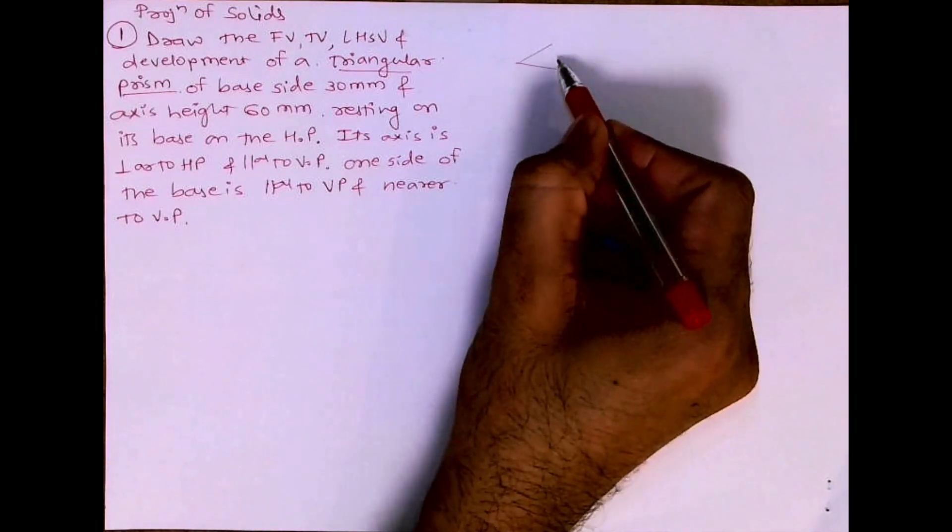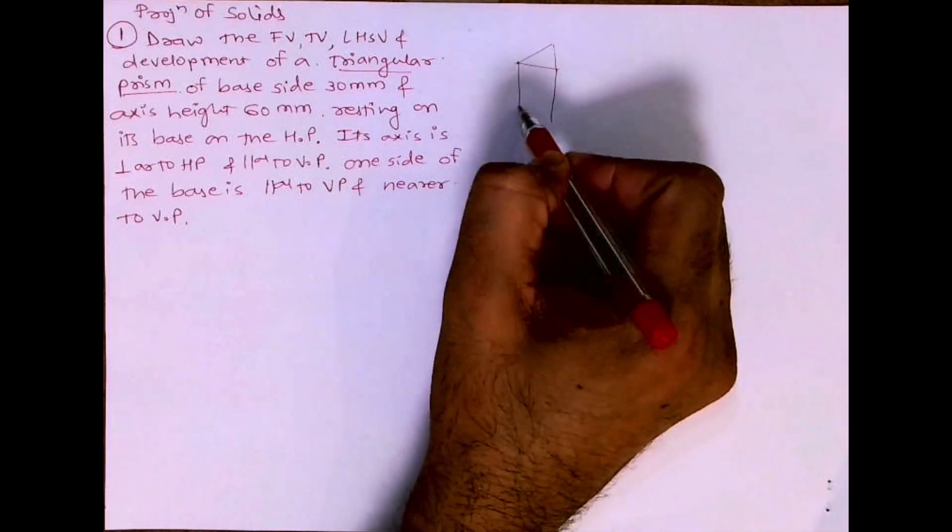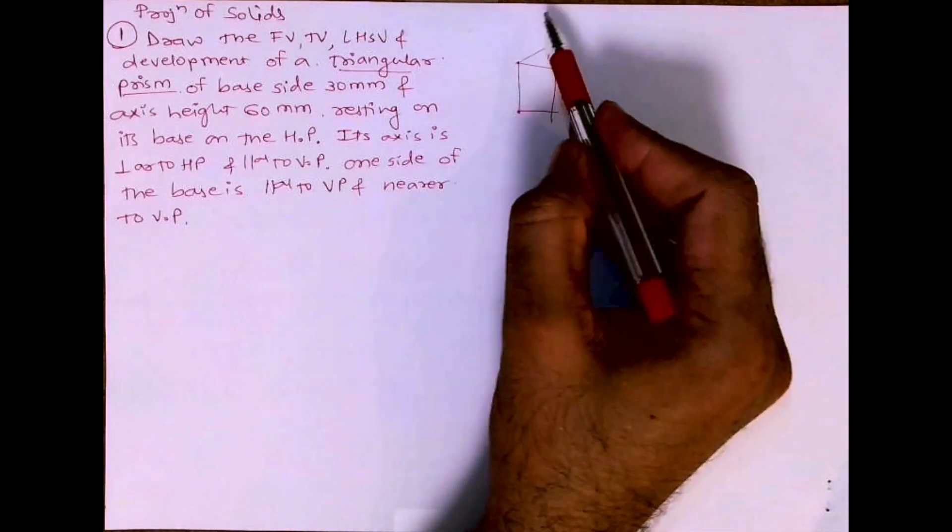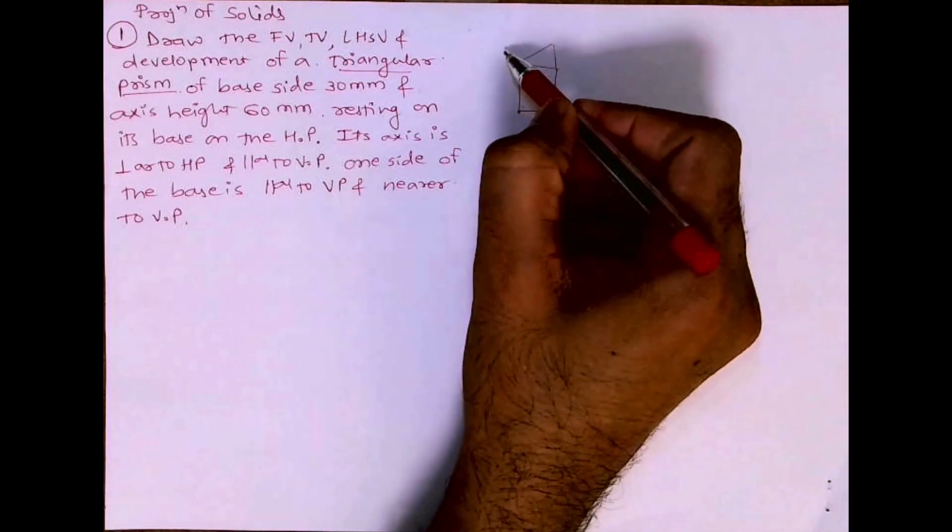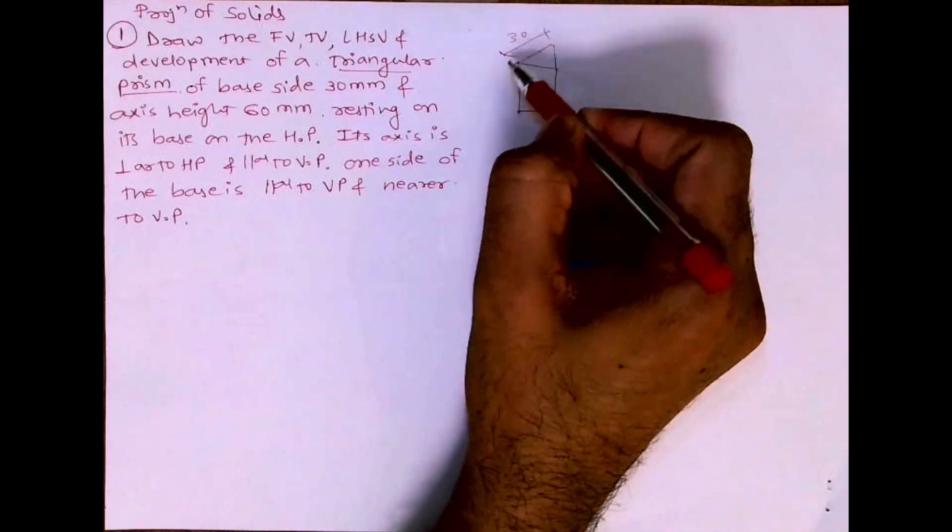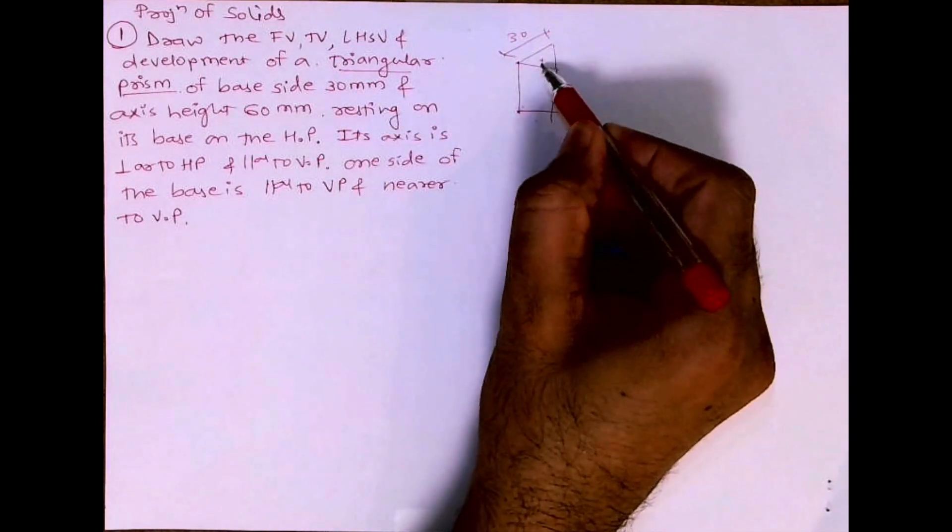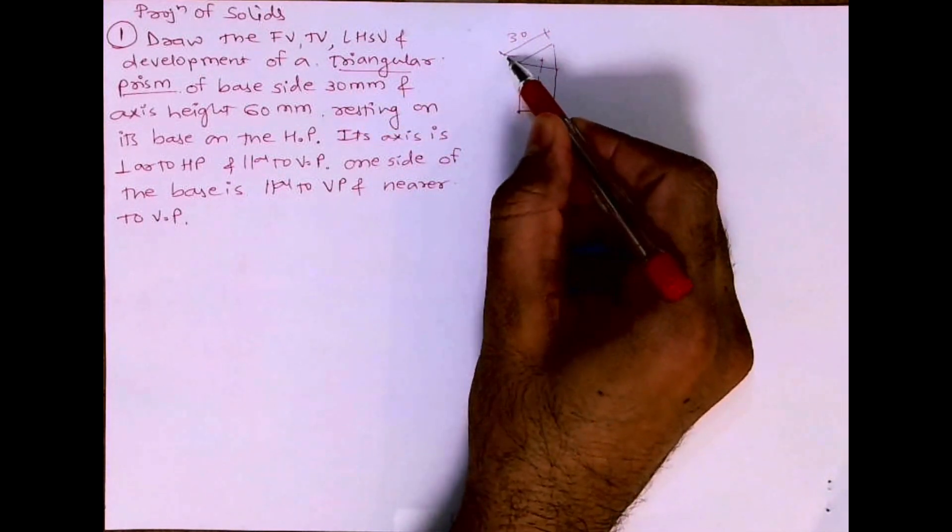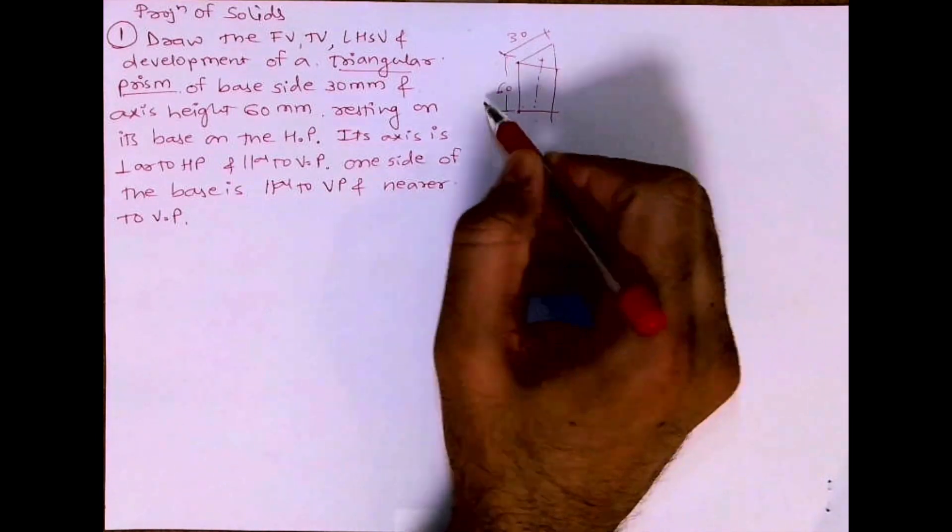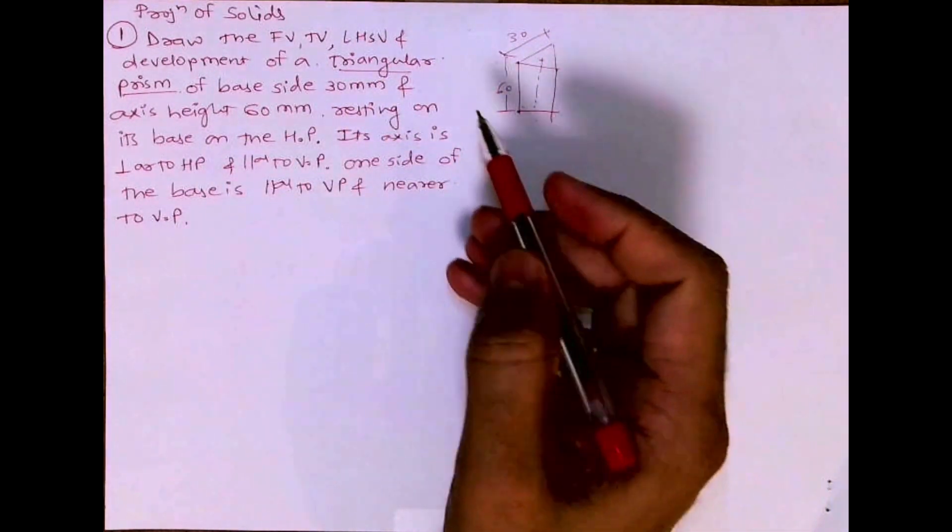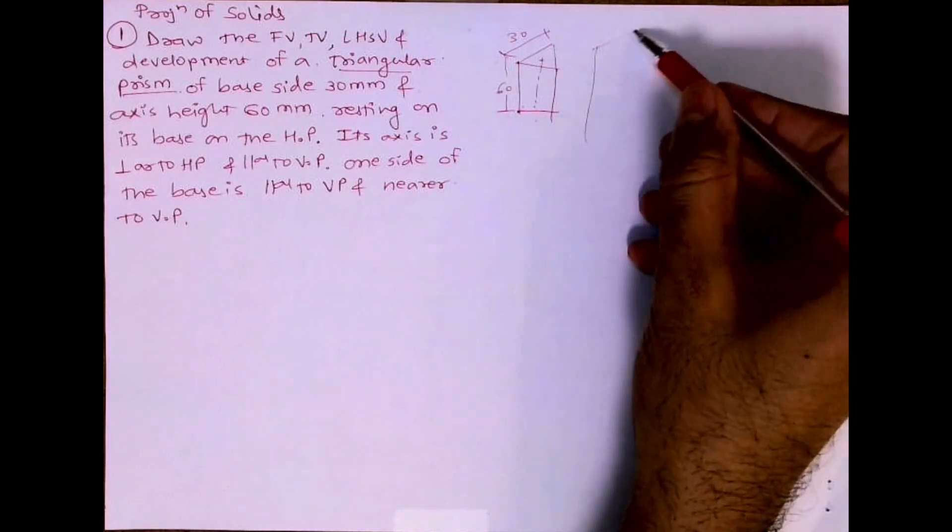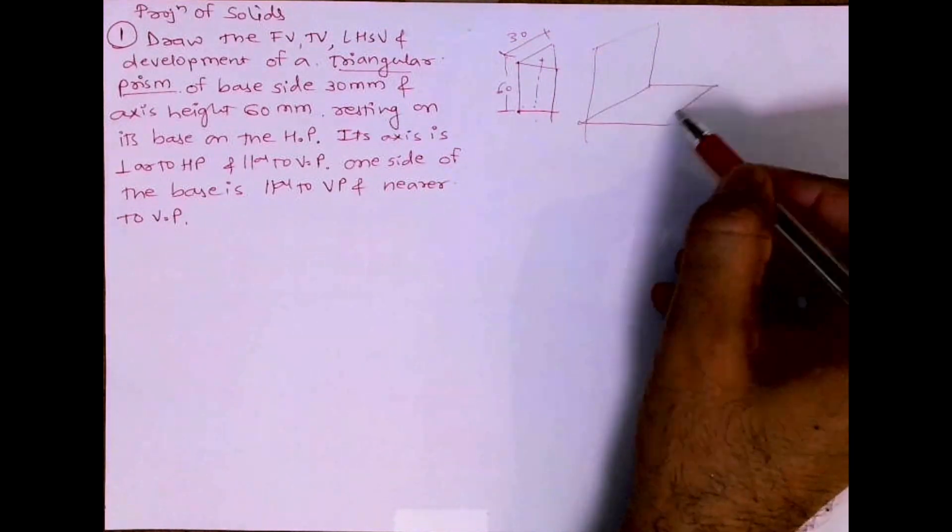See this triangular prism we need to draw. We can draw a triangular prism like this. This is 3D figure, this is just for explanation. And they want one of the side of the base is parallel to VP. Okay, that you need to keep in mind and nearer to VP. See this, this is a triangular prism base 30, height 60.